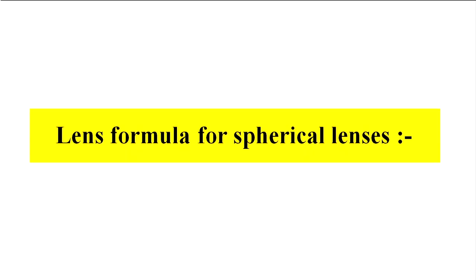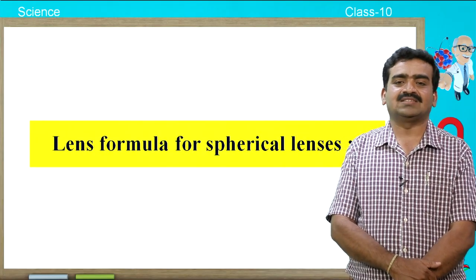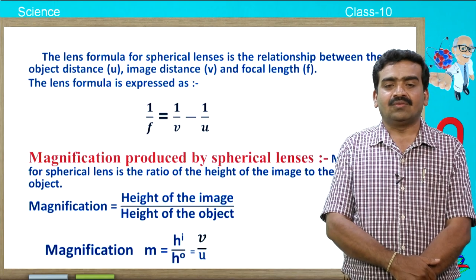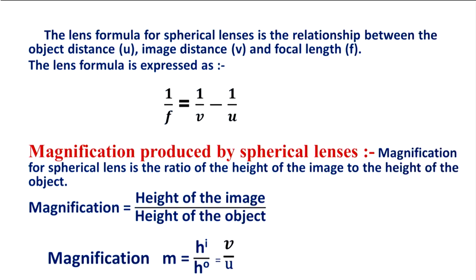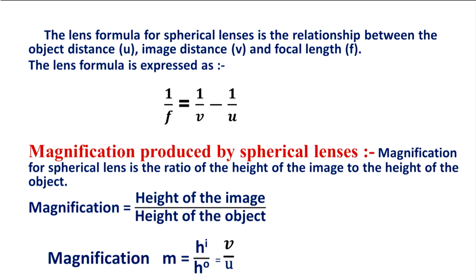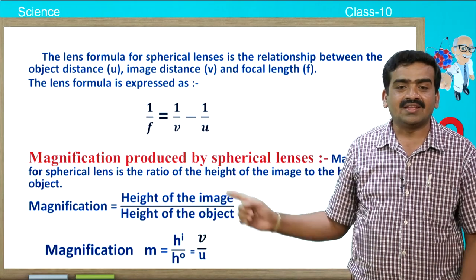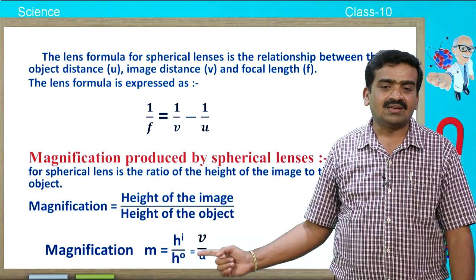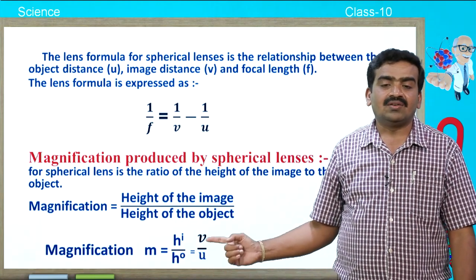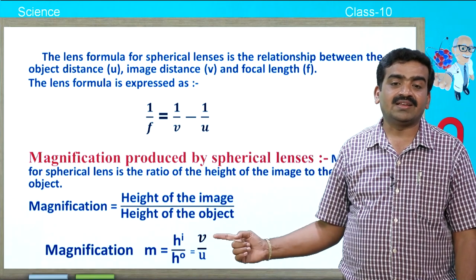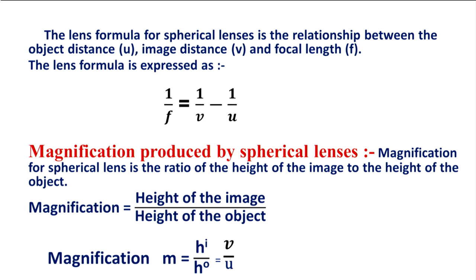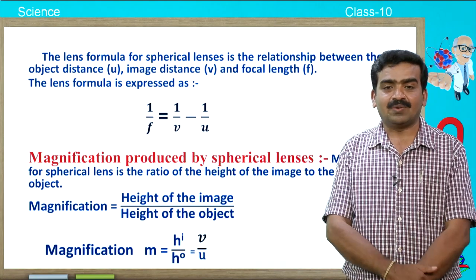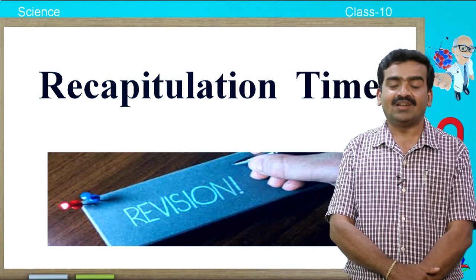Now we are at the end of the session. Let us learn about the lens formula as well as magnification. The lens formula is: 1/f = 1/v − 1/u, where f indicates focal length, v indicates image distance, and u indicates object distance. Magnification is calculated by taking the ratio of height of the image to the height of the object: m = hi/ho. We also get magnification by taking the ratio of image distance to object distance: m = v/u.